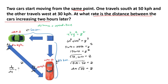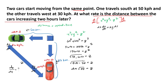Now using implicit differentiation, we can solve for dz/dt. Differentiating x squared plus y squared equals z squared gives us: 2x(dx/dt) plus 2y(dy/dt) equals 2z(dz/dt). Since all terms are divisible by 2, we divide through to get x(dx/dt) plus y(dy/dt) equals z(dz/dt).